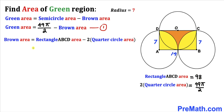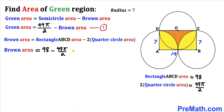We can now calculate the brown area since we know the rectangle area and the two quarter circles area. So the brown area equals 98 minus 49π/2. Let's call this equation number 2.